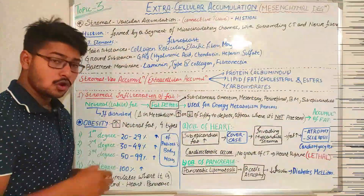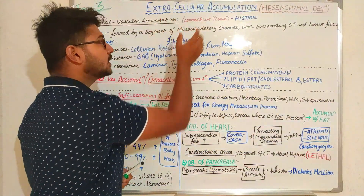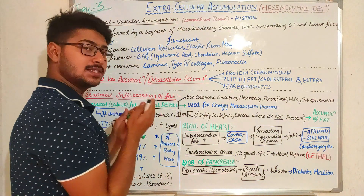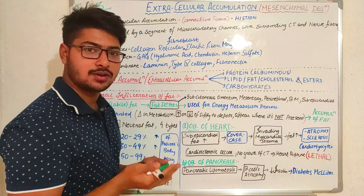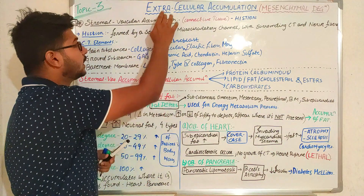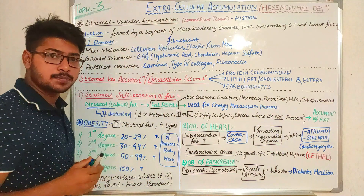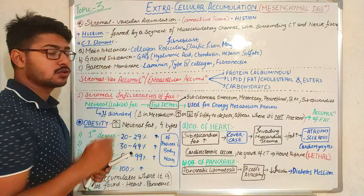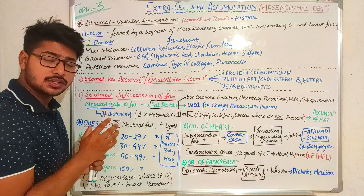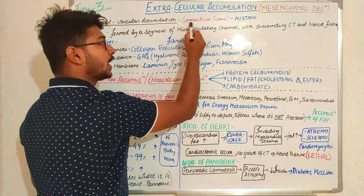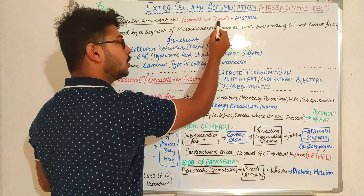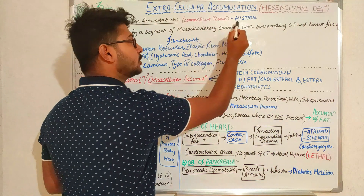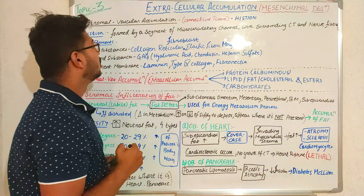For understanding extracellular accumulation, we should know where the extracellular spaces come from. The extracellular spaces comprise of the stromal vascular things, and the stromal vascular things are related with connective tissue. The structural and functional unit of connective tissue is known as histion.